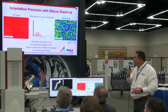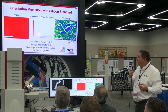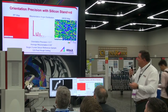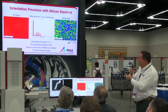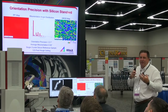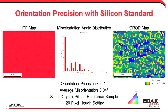We can quantify this further by looking at a piece of single-crystal silicon. We measure precision values where we're essentially at the noise level — under a tenth of a degree. In this case, it was 0.04 degrees on a single crystal. So we can get high precision even at these high-speed configurations.